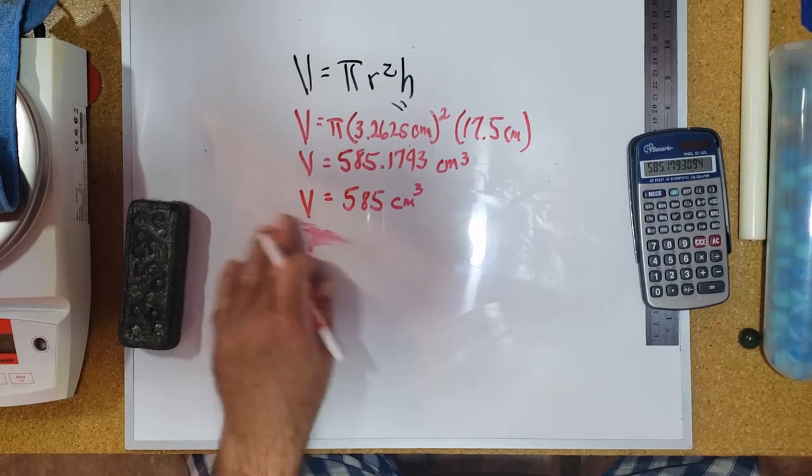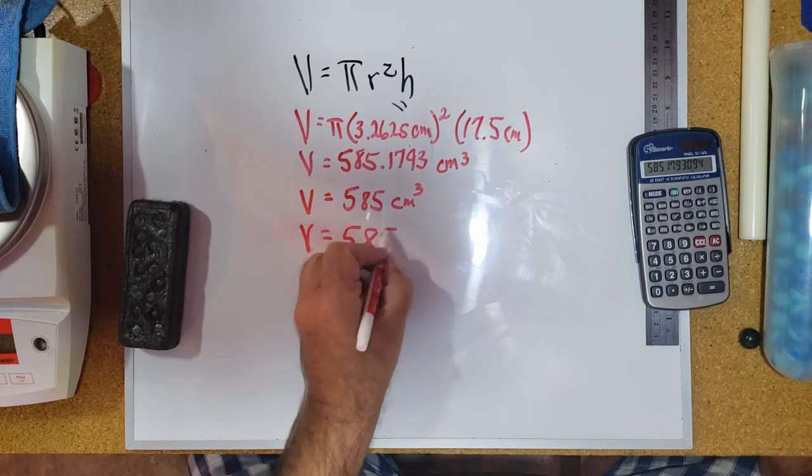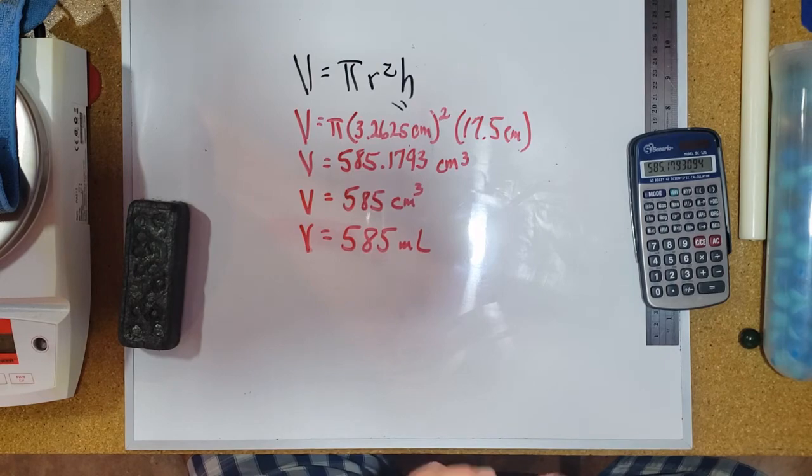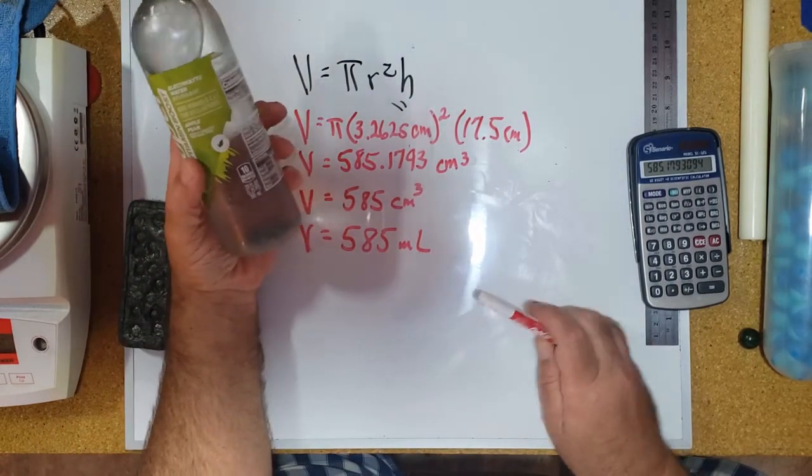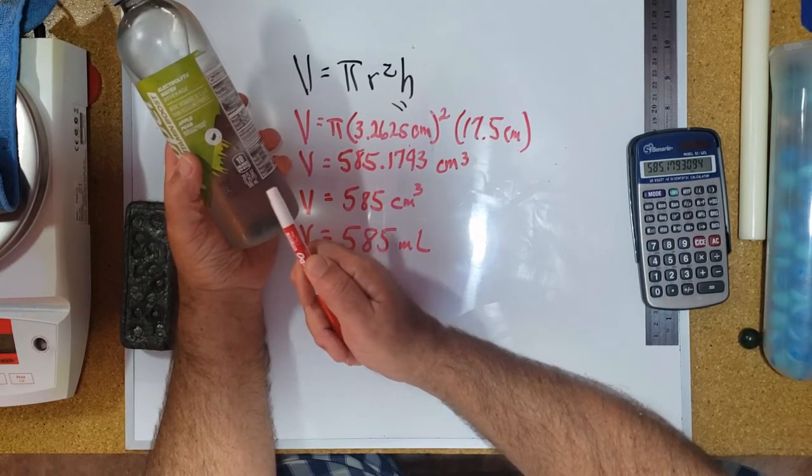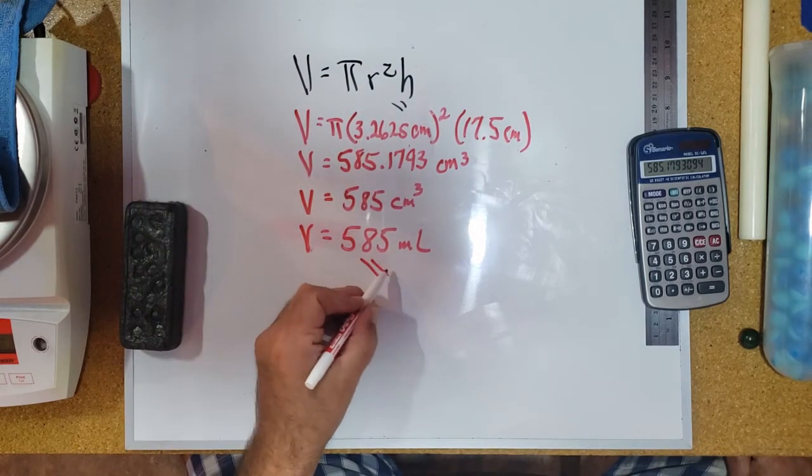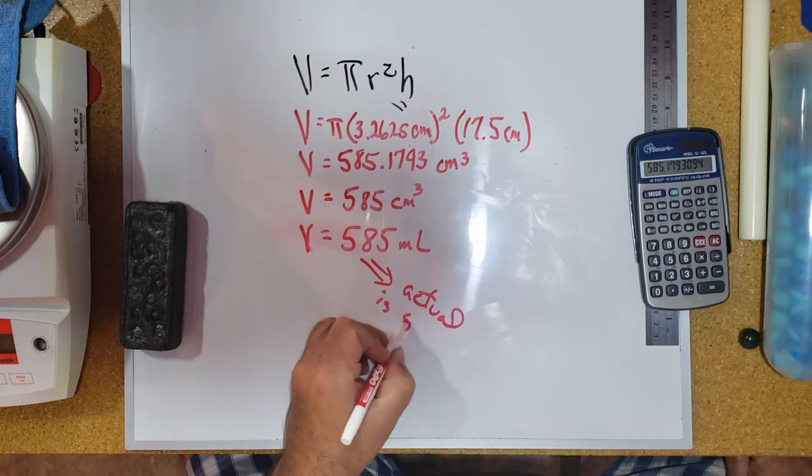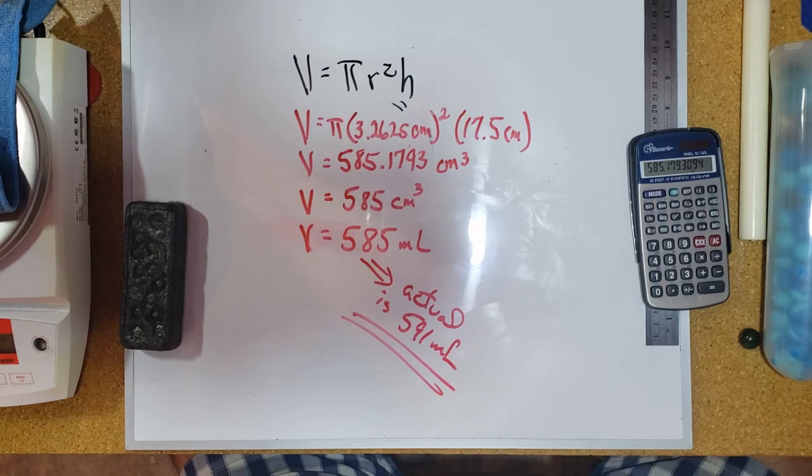However, a cubic centimeter is exactly equal to a milliliter, so this is also 585 milliliters. And we go back and we look at the volume that's labeled or printed on the label here—it says 591 milliliters. So the actual is 591 milliliters. So I would say that's not bad.